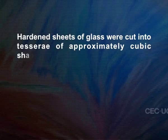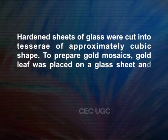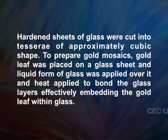The process of making glass tesserae involves painstaking work. Glass tesserae were made out of a compound of sand, soda or potassium lime, with metallic oxide which determined the hues. Hardened sheets of glass were cut into tesserae of approximately cubic shape. To prepare gold mosaics, gold leaf was placed on a glass sheet and liquid glass was applied over it, and heat was applied to bond the glass layers, effectively embedding the gold leaf within the glass.